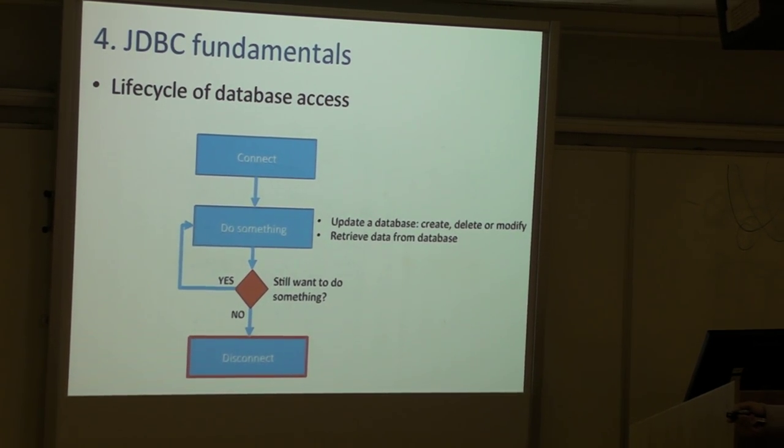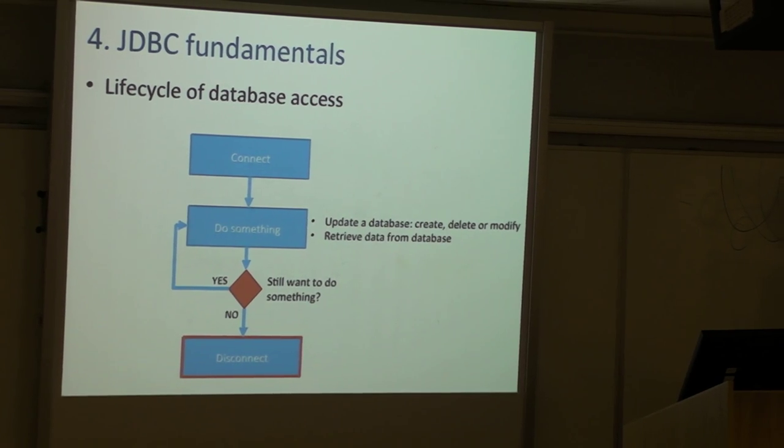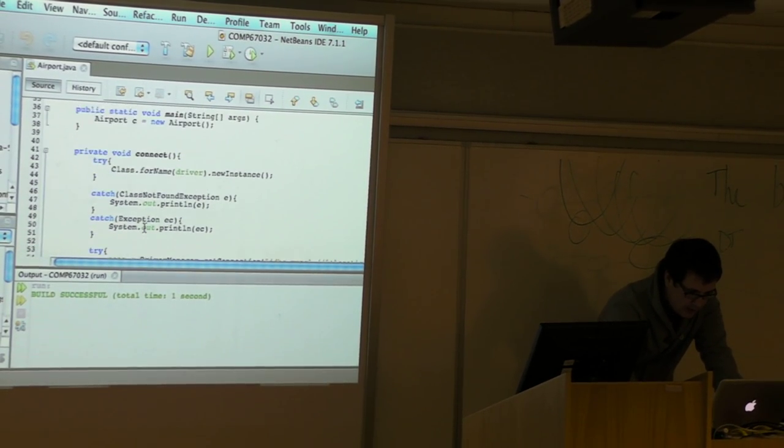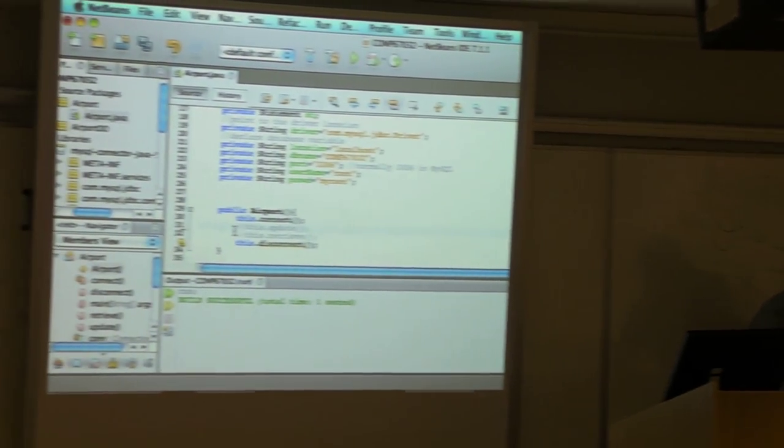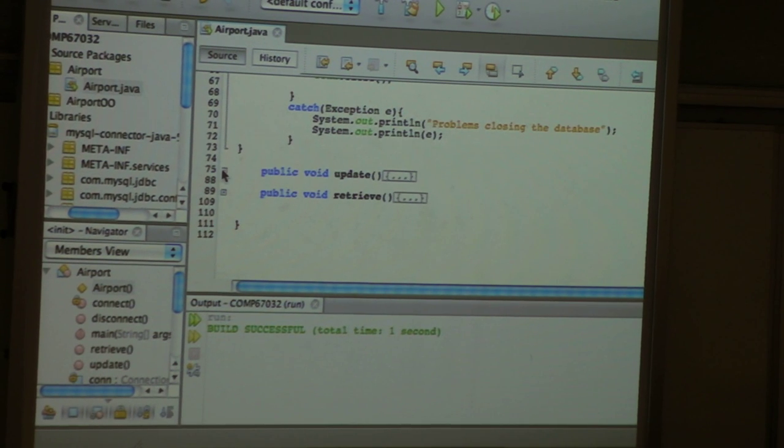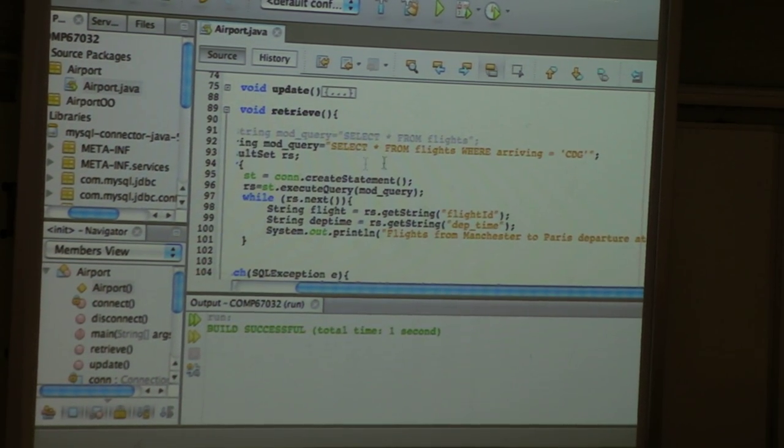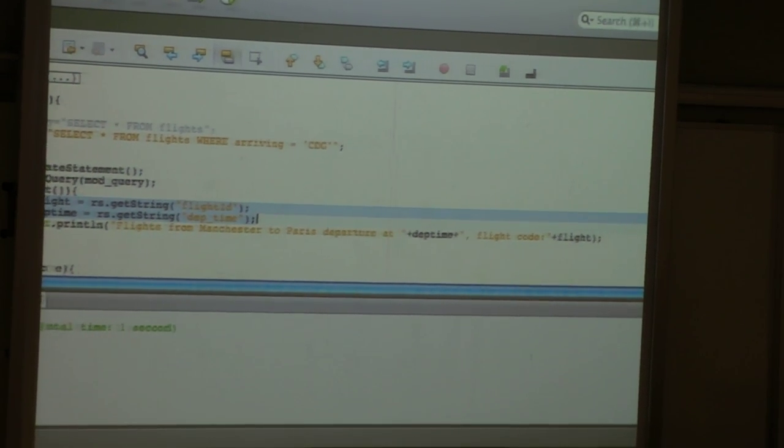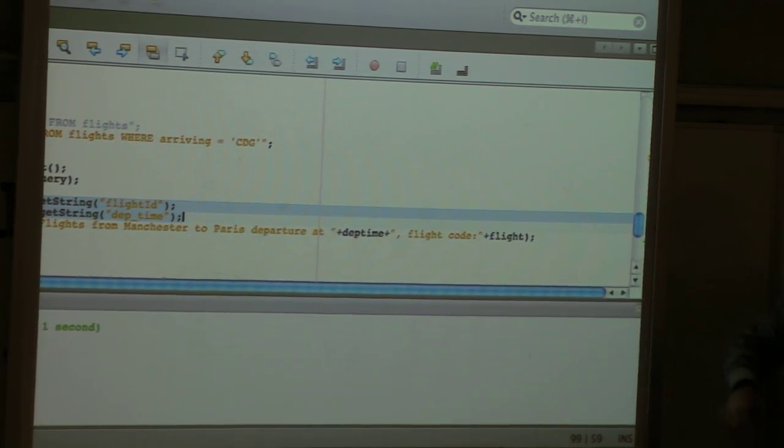Let's see how this works. Come back to the NetBeans project and take out the update and focus on information retrieval. I have this sentence, the same as the one seen on the slide. I make use of the classes and methods I mentioned, and what I do once I retrieve the attributes I want from each row, I just print on the screen flight from Manchester to Paris, departure at departure time.